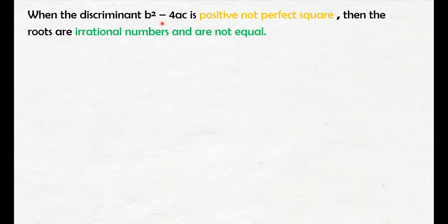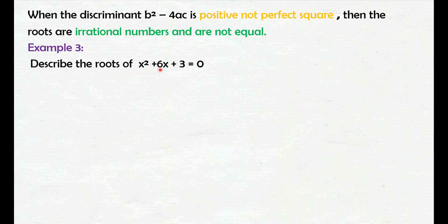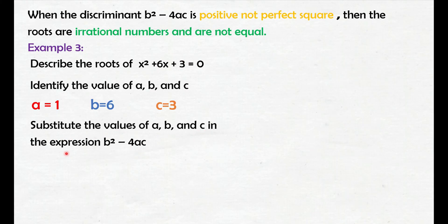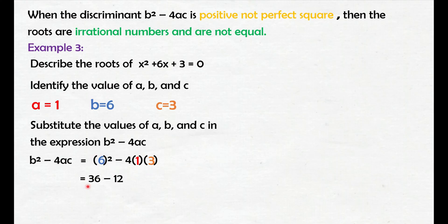When the discriminant b squared minus 4ac is positive but not perfect square, then the roots are irrational numbers and are not equal. Example number 3: describe the roots of x squared plus 6x plus 3 equals 0. Identify natin yung value ng a, b, and c: yung a natin is 1, yung b is 6, and yung c is 3. Substitute the values in b squared minus 4ac. 6 squared is 36, negative 4 times 1 times 3, that is negative 12. 36 minus 12, that is 24. Yung discriminant natin ay positive, pero hindi siya perfect square.